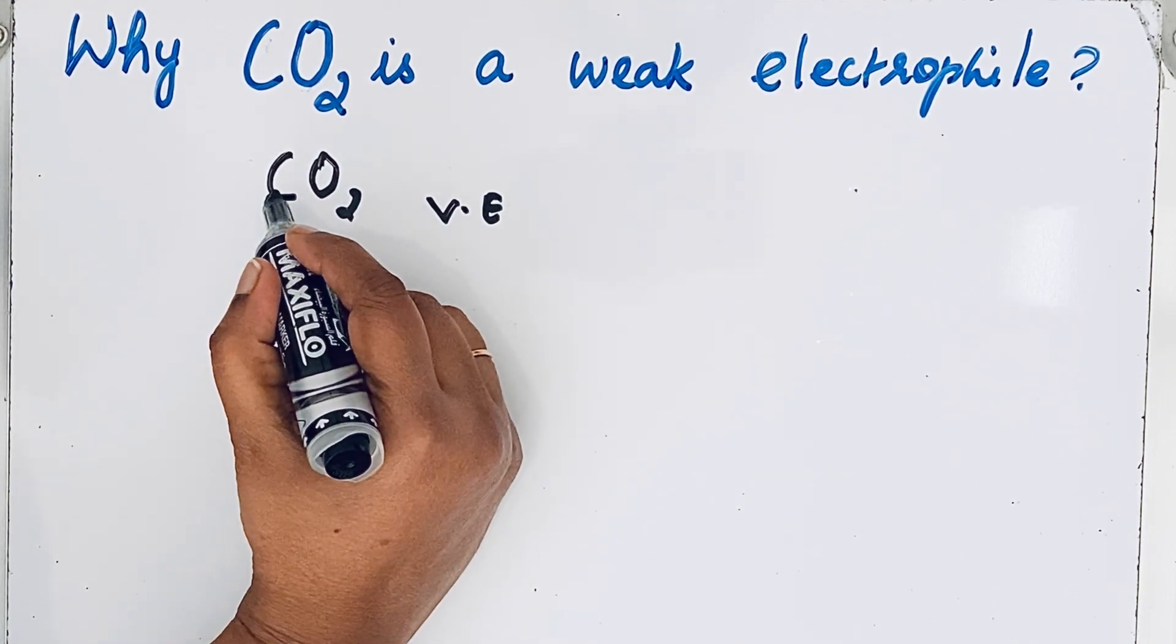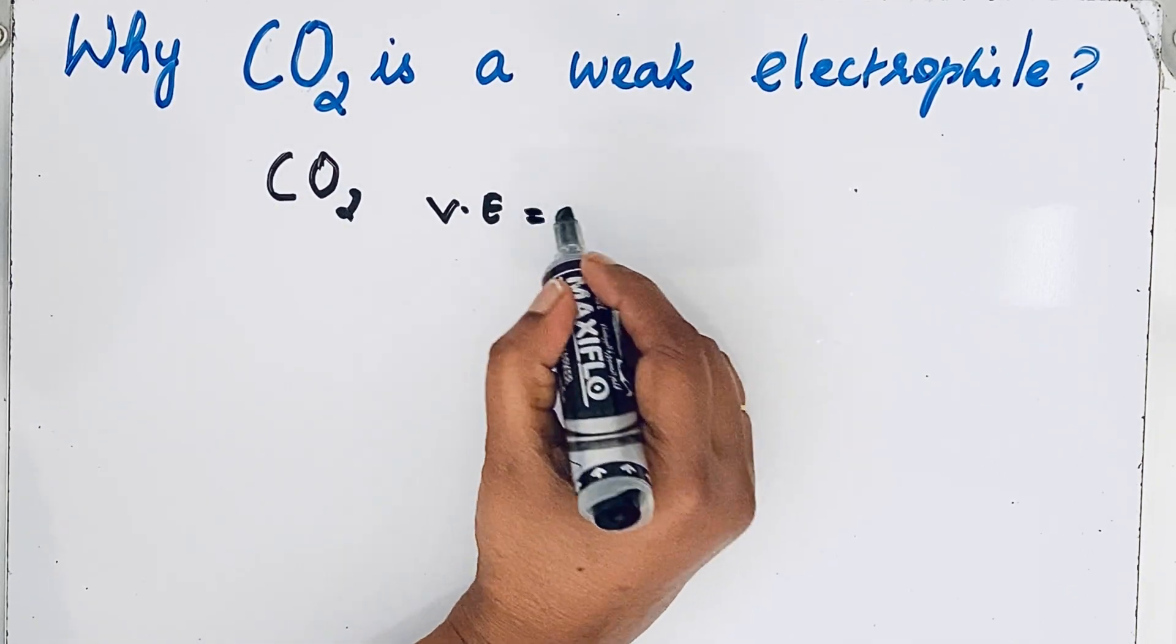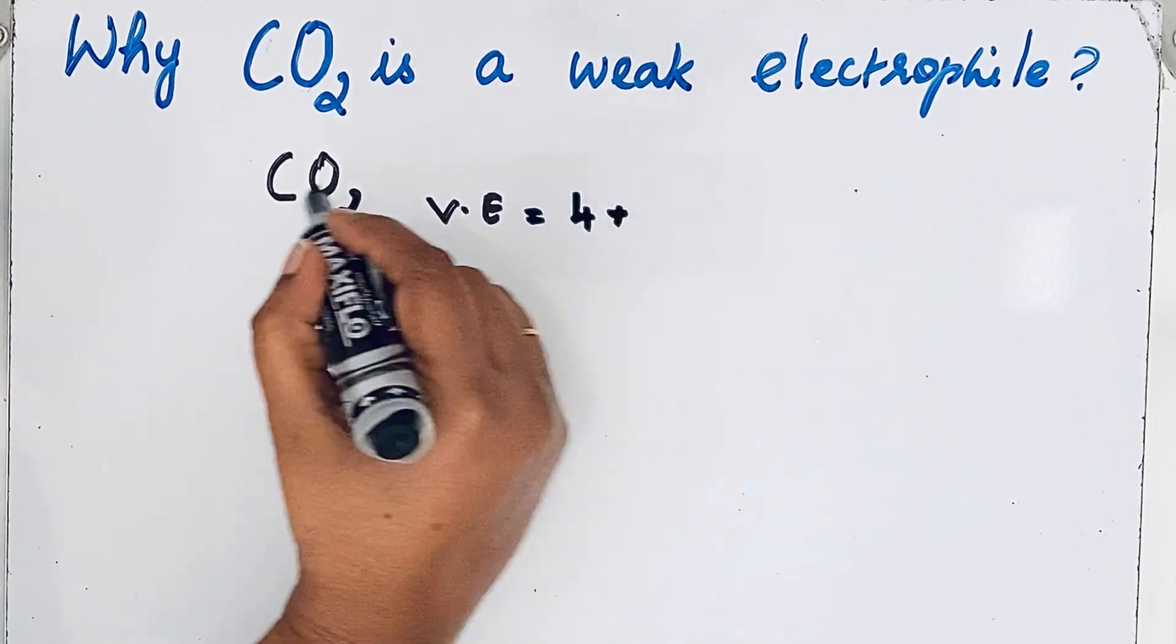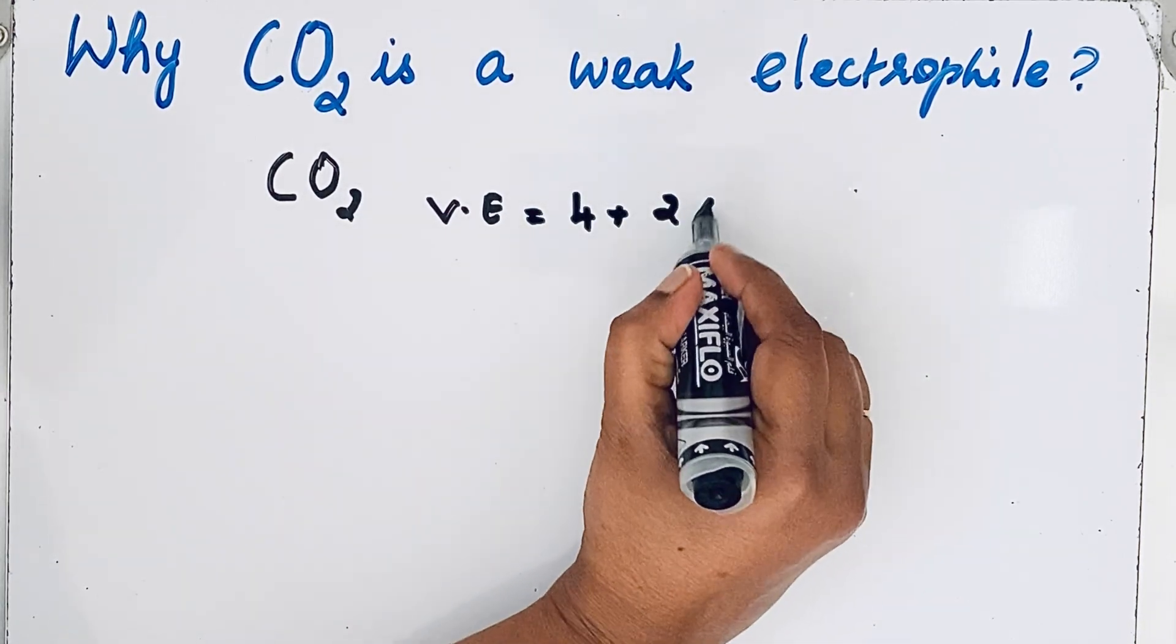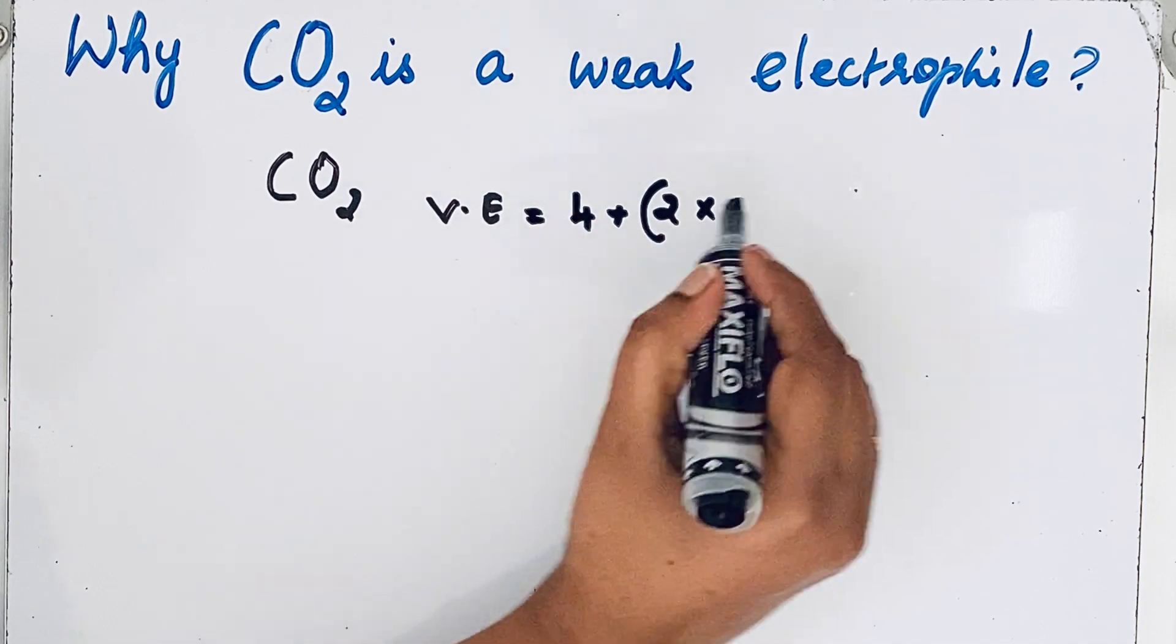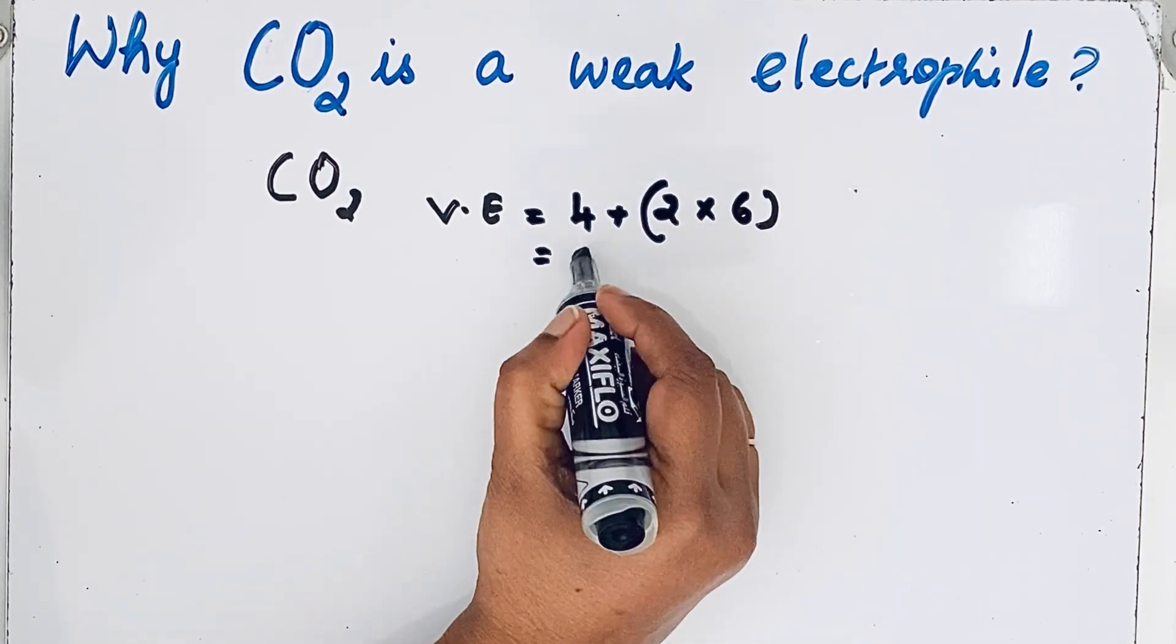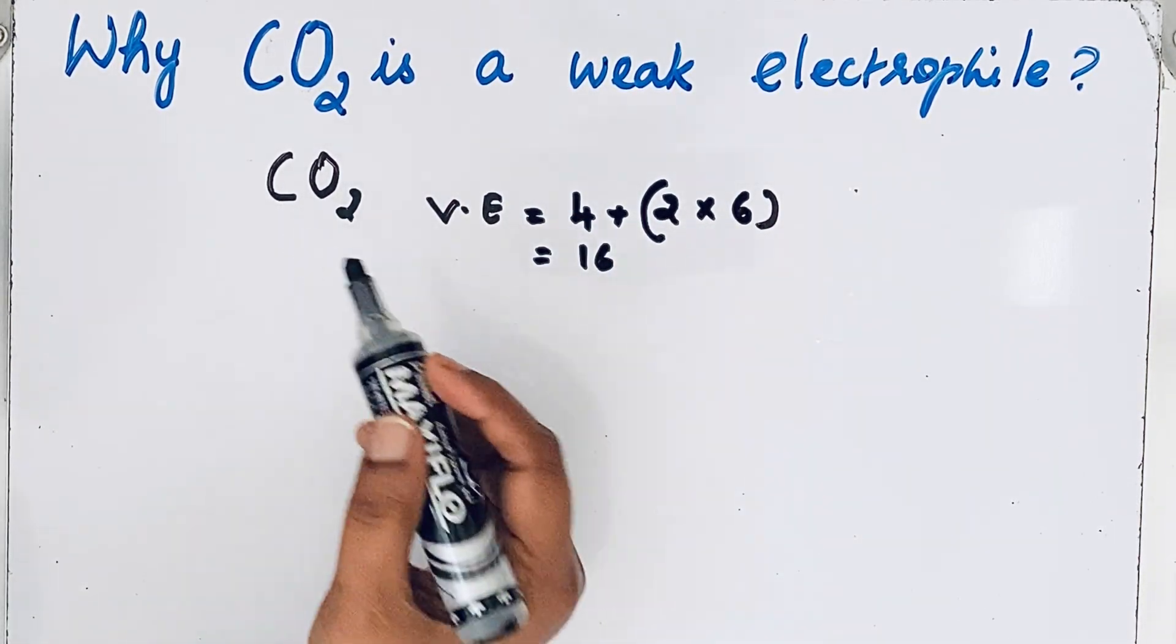We have one carbon atom. Valence electrons of carbon is 4, and we have two oxygen atoms, so 2 times valence electrons of oxygen, 6, equals 12. Total is 16. In the center, we have carbon and the highly electronegative oxygen.